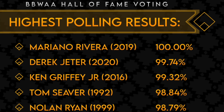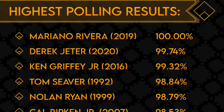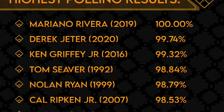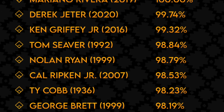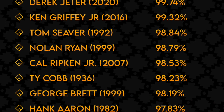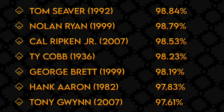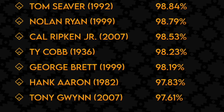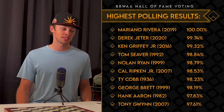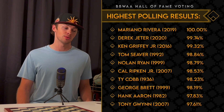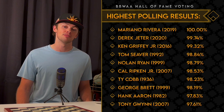With around 400 ballots collected each year, only one player in baseball history has been a unanimous selection. That was New York Yankees closer Mariano Rivera in 2019. The next closest is his longtime teammate, shortstop Derek Jeter, receiving all but one of the 397 votes in 2020.